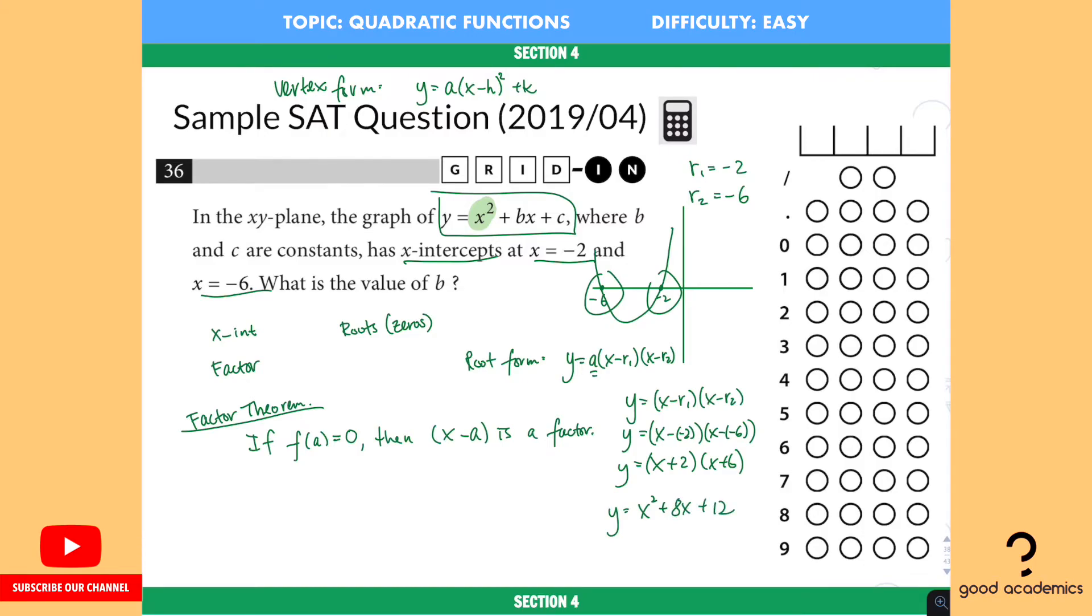And what is the answer for b? Well, b is the coefficient sitting right in front of the x. So what is the number sitting right in front of the x? Number 8. So the answer is going to be just 8.